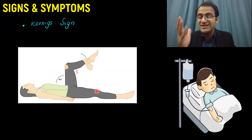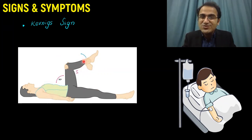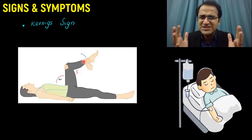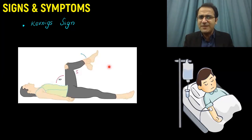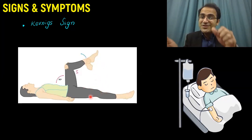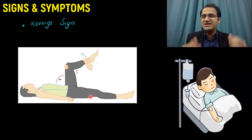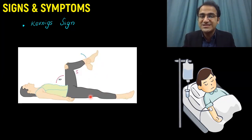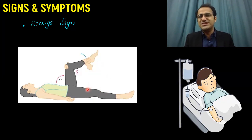The concept behind Kernig's sign is that the patient has inflamed meninges. When you try to stretch those meninges by straightening the leg, the patient experiences severe pain down the spine, or they flex the other knee joint to relieve that pain, since flexing the knee relieves meningeal irritation. Some meningitis patients will even lie in bed with their knees flexed for this reason.